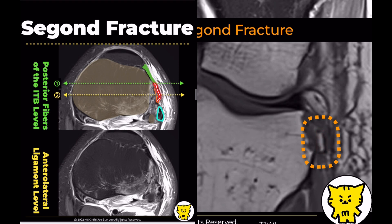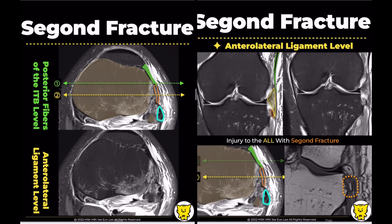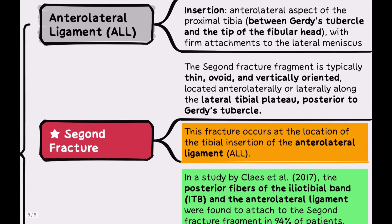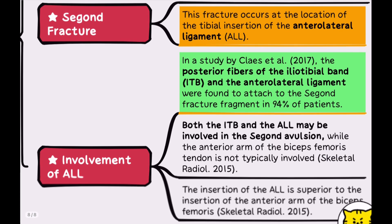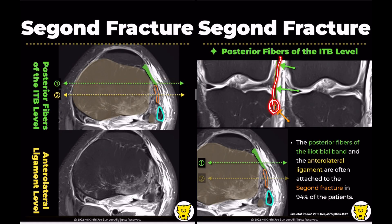Diagnosing small or non-displaced Segond fractures, however, can sometimes be tricky. A couple of key points: while named after the anterolateral ligament, a Segond fracture may involve other lateral soft tissue structures such as the iliotibial band and the biceps femoris tendon. Specifically, the posterior fibers of the iliotibial band and the distal anterolateral ligament are often avulsed together in a Segond fracture.